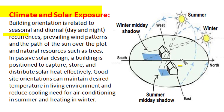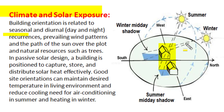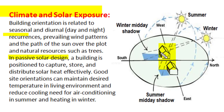Building orientation is related to seasonal (summer and winter) and diurnal (day and night) recurrences which take place in that climate region. It also considers prevailing wind patterns and the path of the sun over the plot. Building orientation also considers natural and man-made structures such as trees, ponds, and tall buildings. One important concept of green building is passive solar design, where a building is positioned to capture, store, and distribute solar heat effectively.